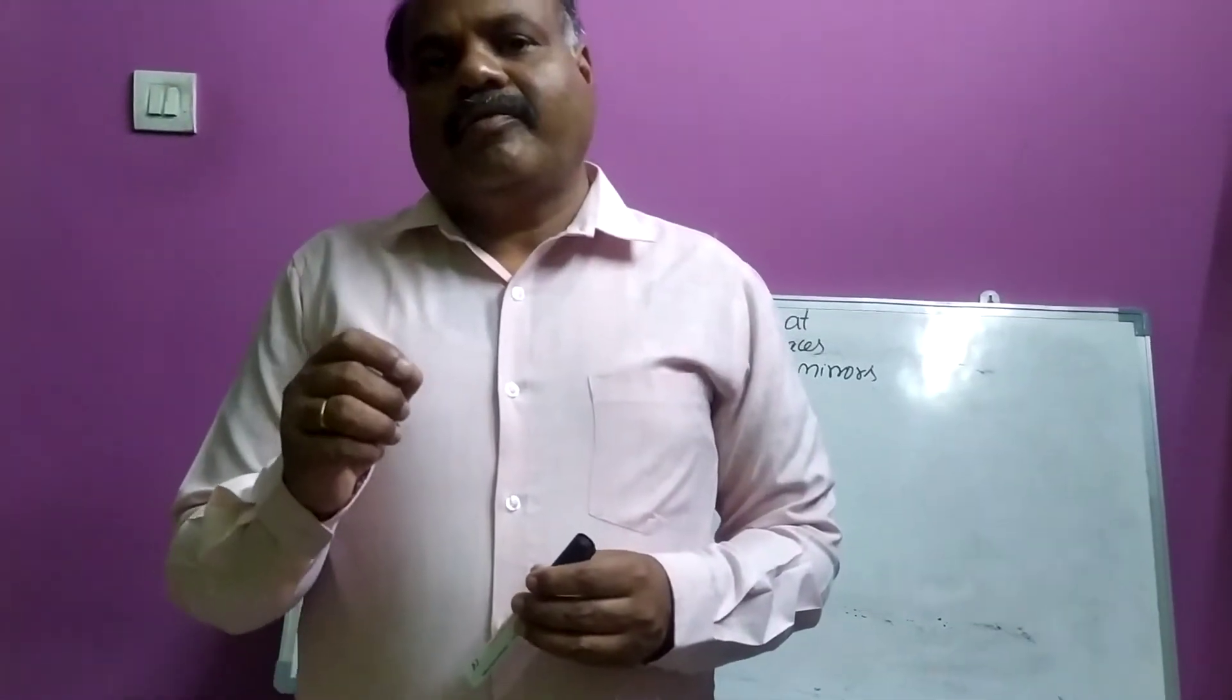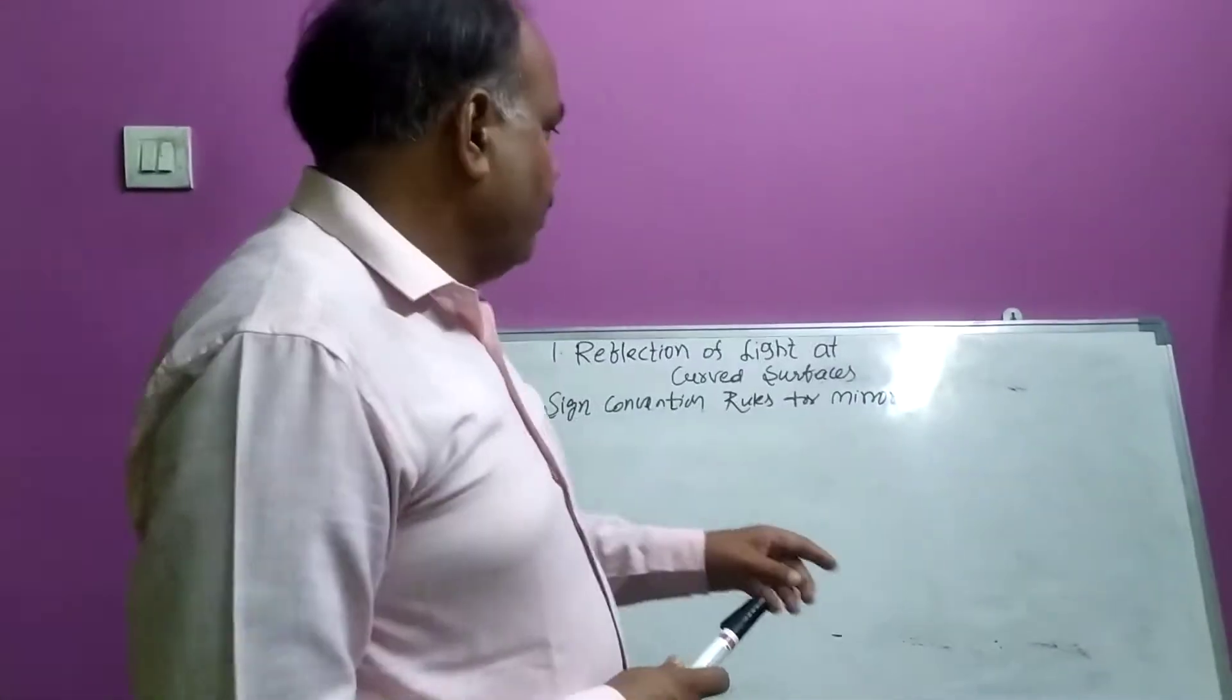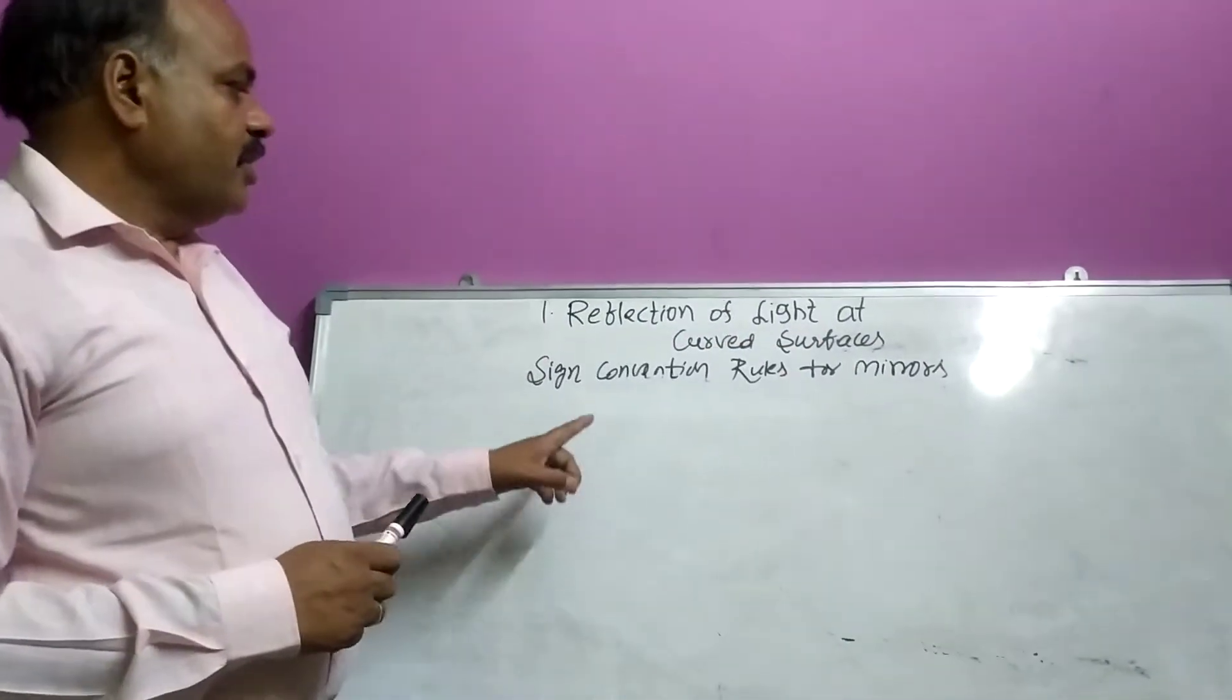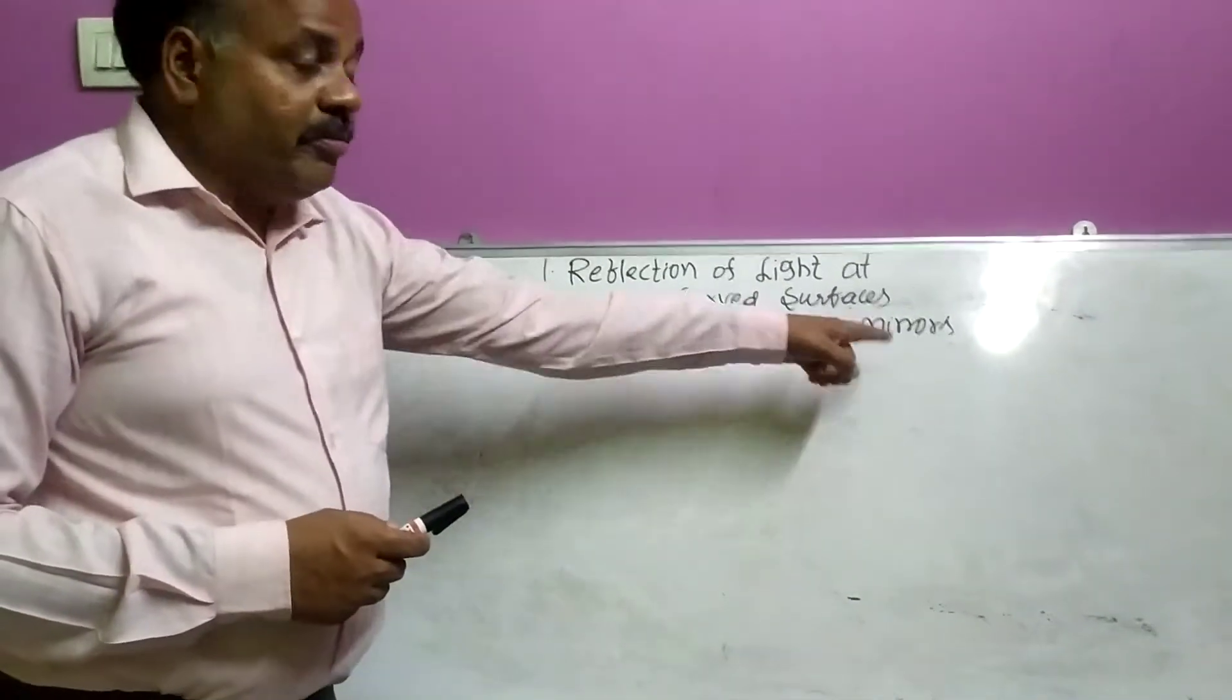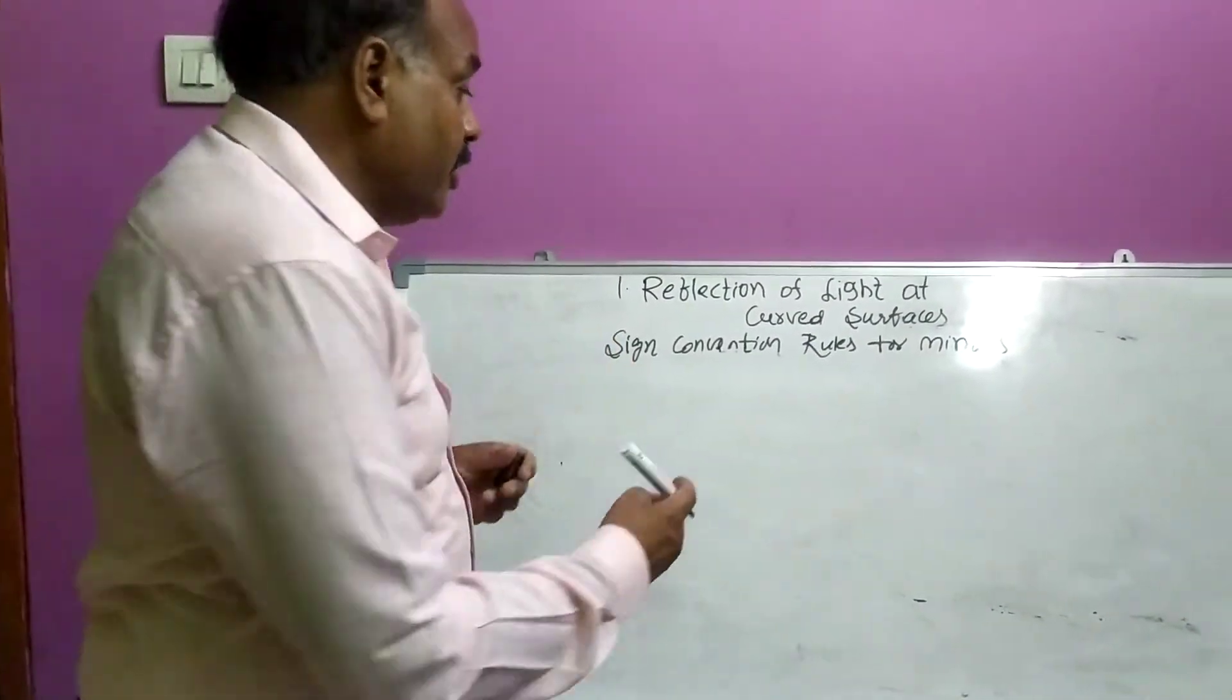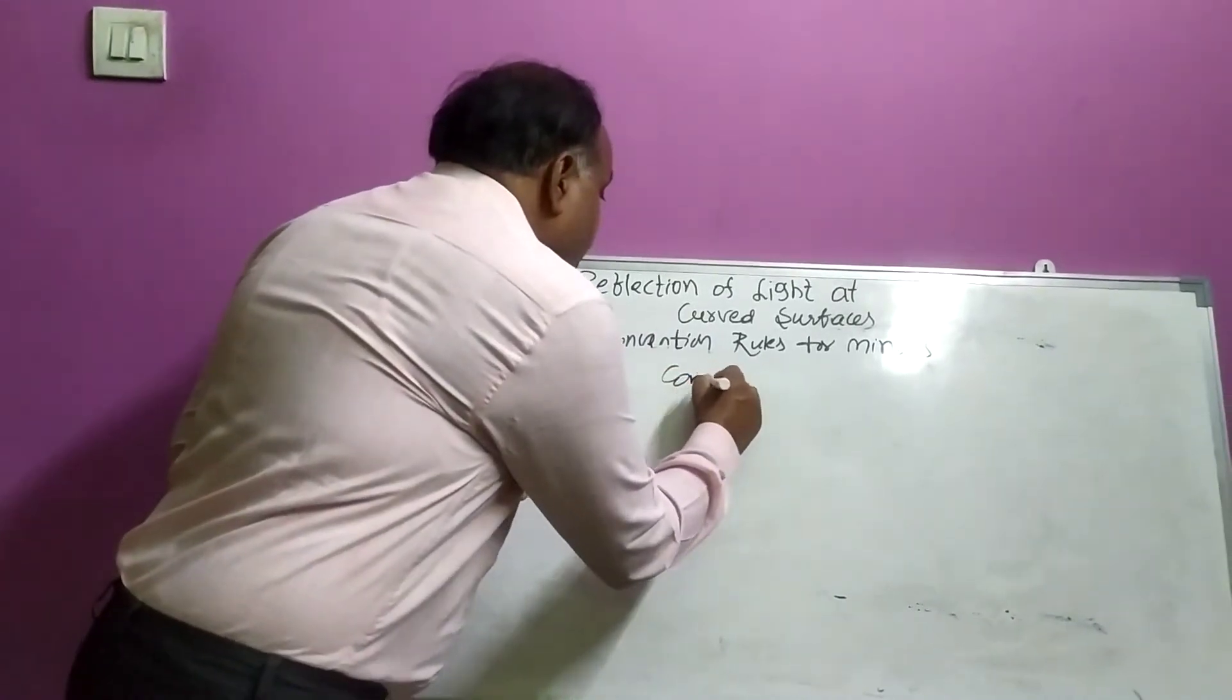So in our physics first lesson, reflection of light at curved surfaces. Now we are going to discuss sign convention rules for mirrors, particularly convex mirror I am taking here.